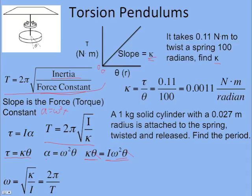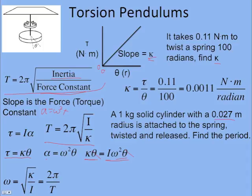Now we attach a 1-kilogram solid cylinder with a given radius, twist it, and release it — what's the period? We write down the period equation: T = 2π√(I/κ). The rotational inertia of a solid cylinder is (1/2)mR², which would be given to you. Plugging in the values including the kappa we already found, the period comes out to 3.6 seconds.